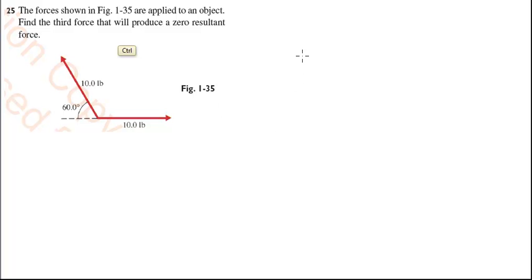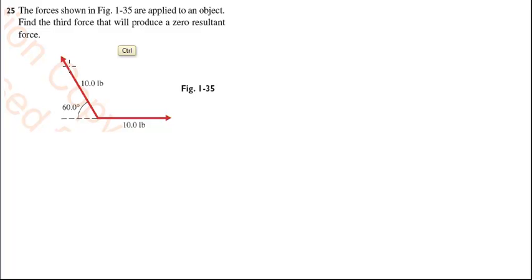So the idea, in overview, is to first sum these two vectors, and then the third vector that will make the sum equal to zero will be the negative of the sum of these two vectors.